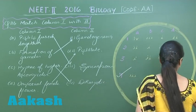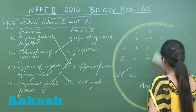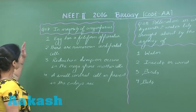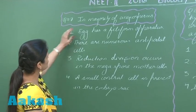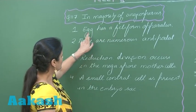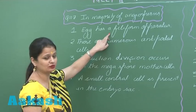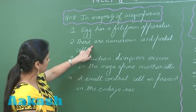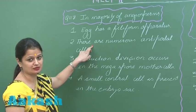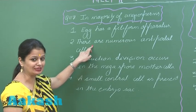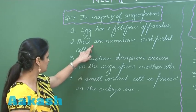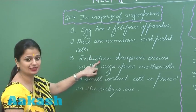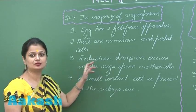Moving on to question number 117: in the majority of angiosperms, the statement that the egg has a filiform apparatus is wrong — it is the synergids that contain the filiform apparatus. The statement that there are numerous antipodal cells is also wrong.